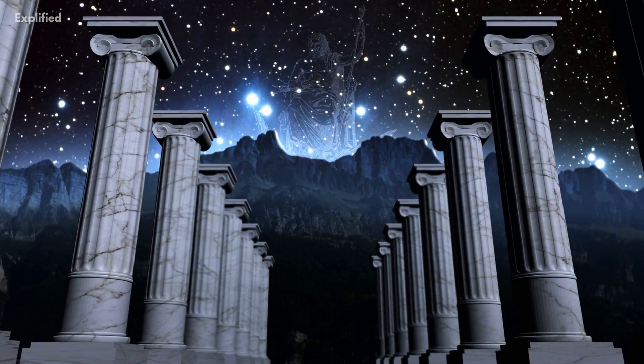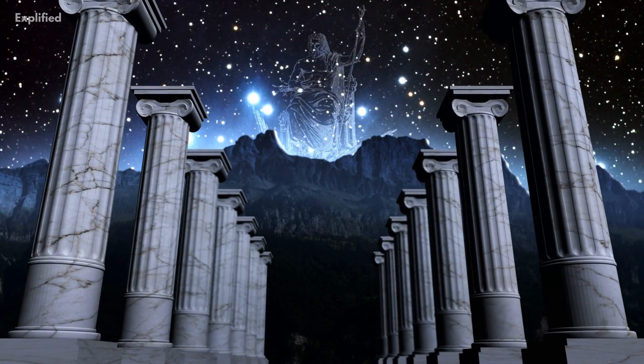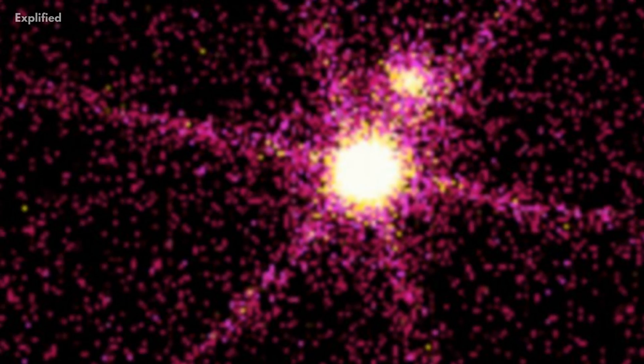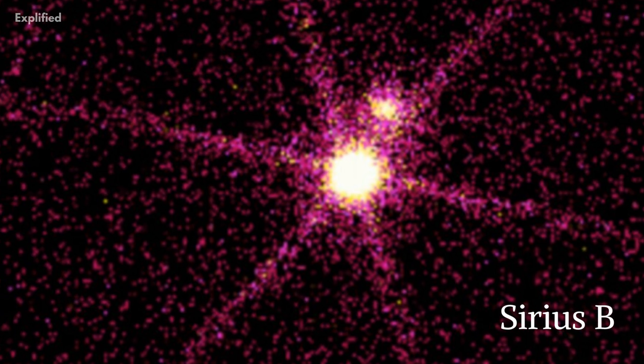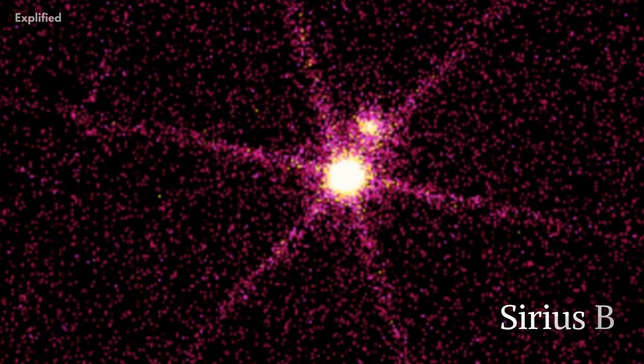Because Sirius is so brilliantly bright, the ancients were aware of it. However, astronomers were taken aback when Sirius B, a companion star, was discovered in 1862.